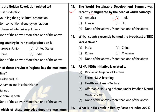Question 44: Which country recently banned the broadcast of BBC World News? The answer is B — China. Question 45: ASA India Initiative is related to? The answer is D — Affordable housing scheme under Pradhan Mantri Awaas Yojana.